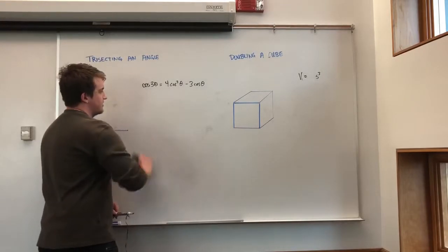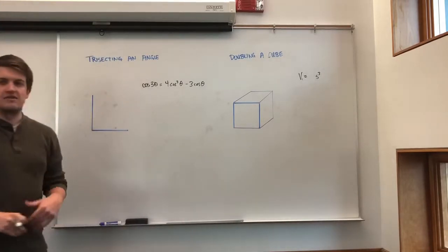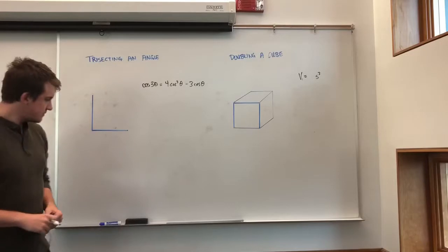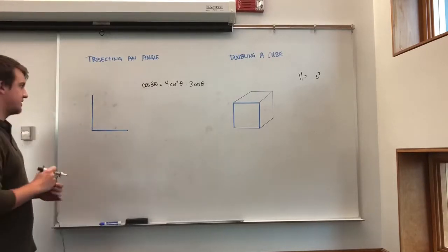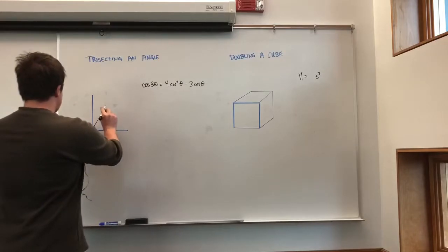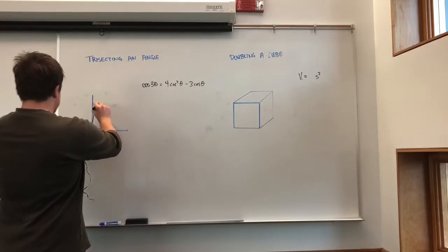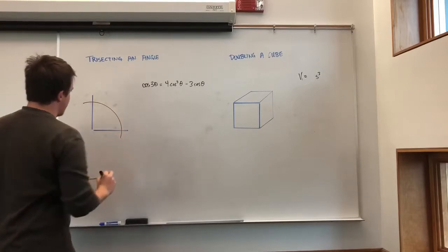Now we look at a special case of an angle of 90 degrees or a right angle, which can be trisected using a compass and a straight edge. In this case, we will take our compass, putting the base at the vertex, and making a circle.